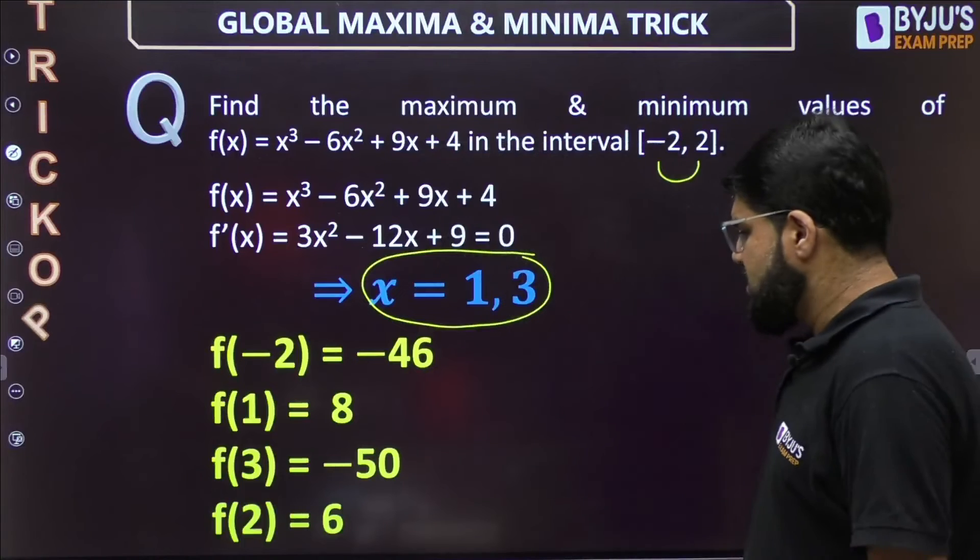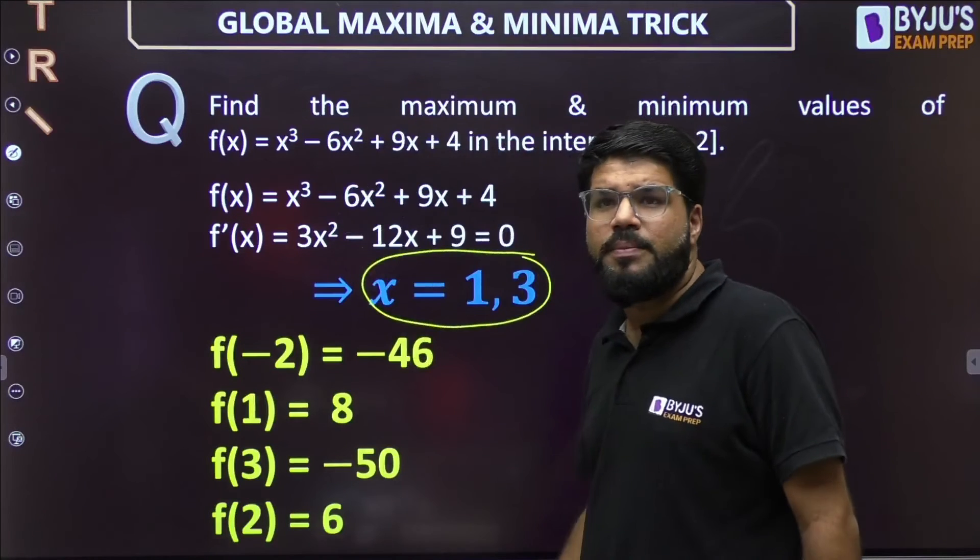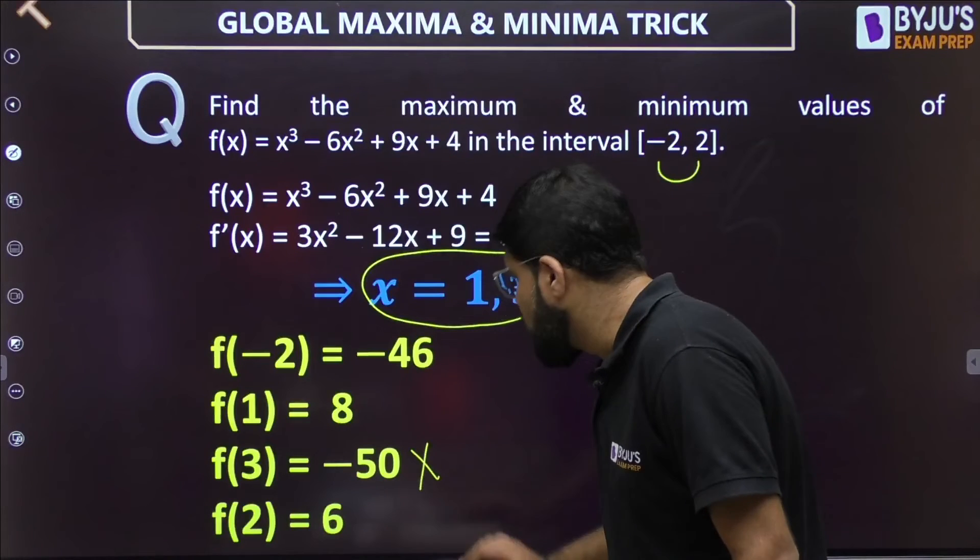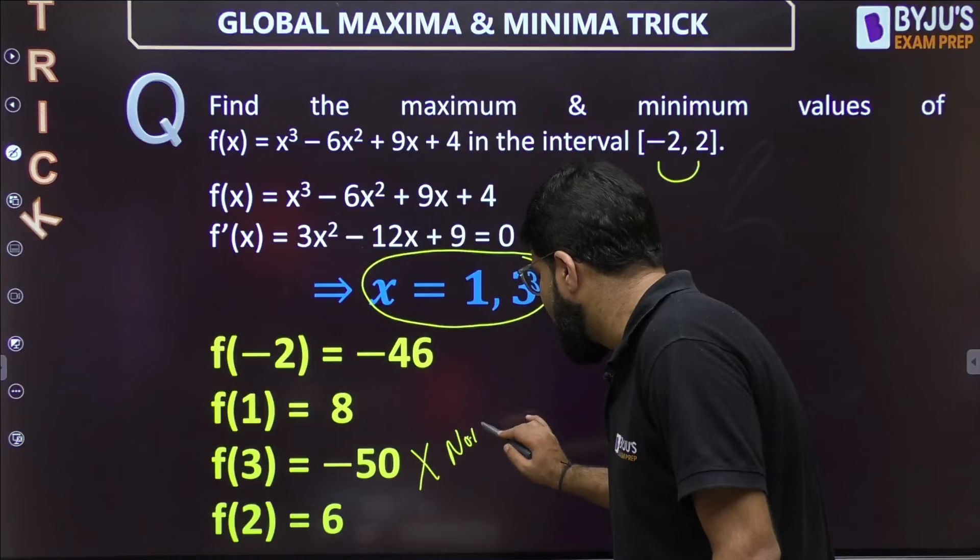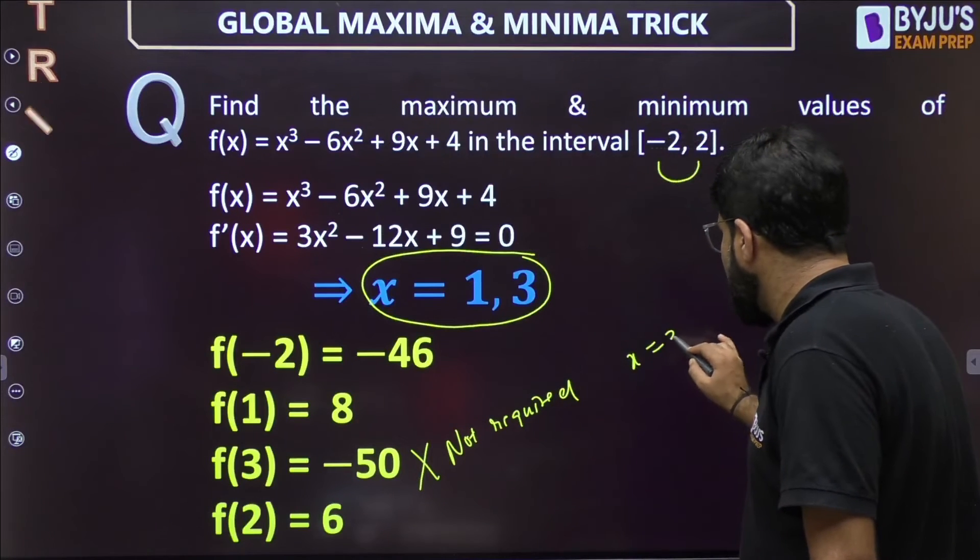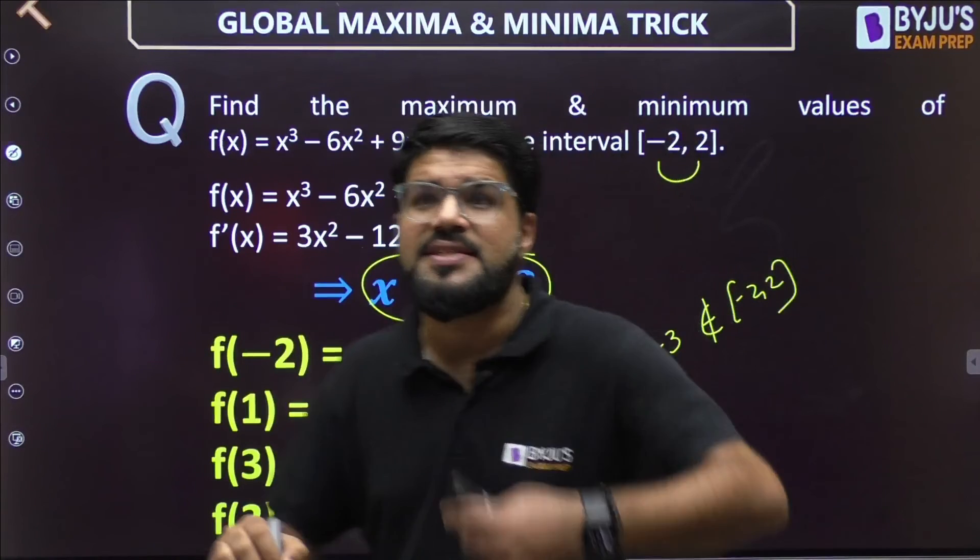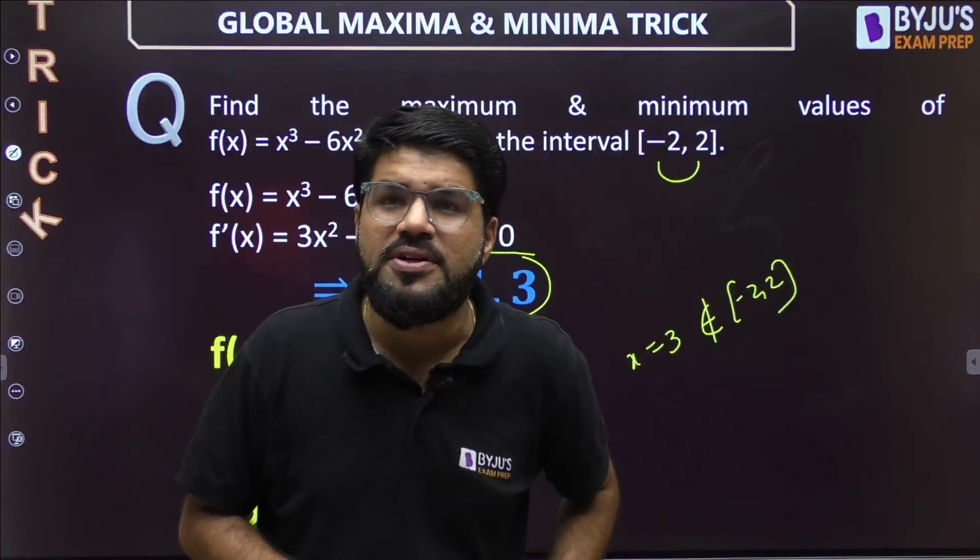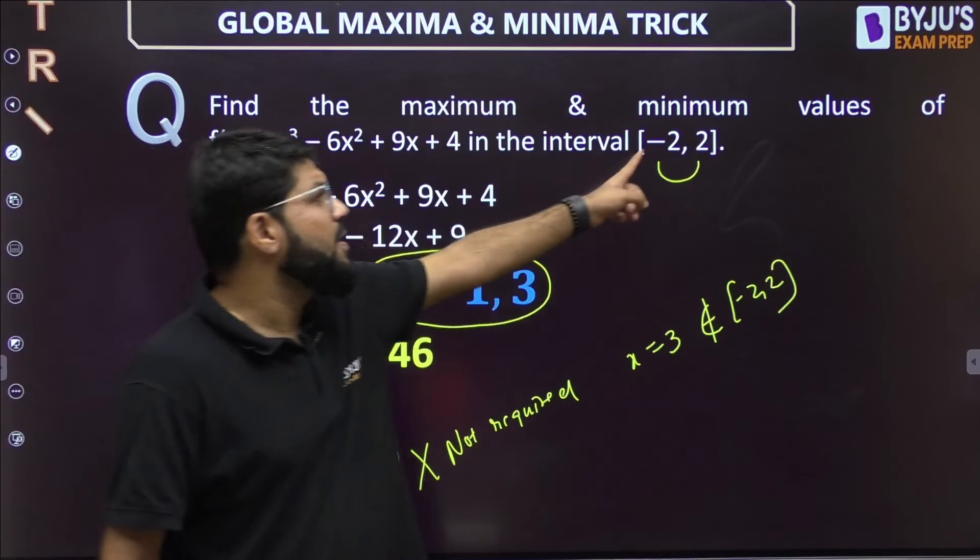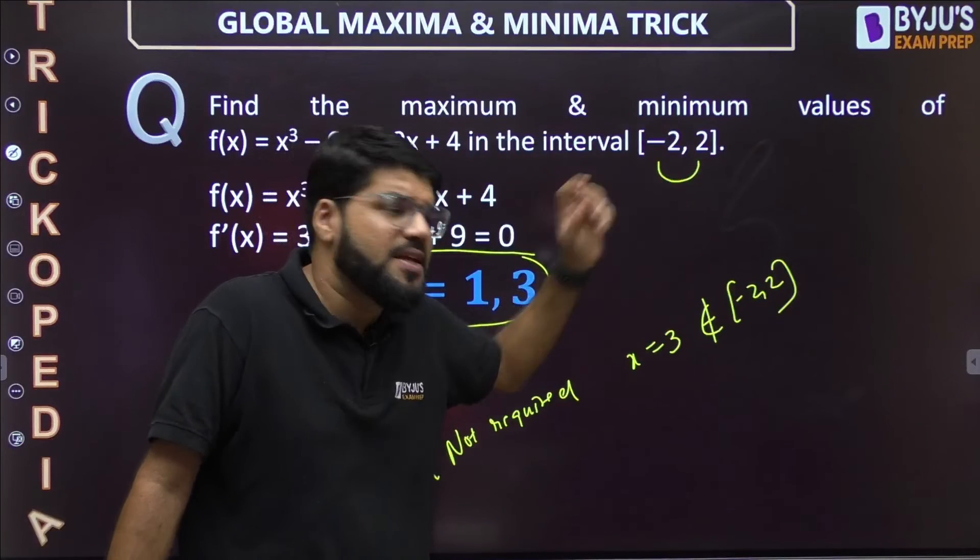But the important catch here is, you might be thinking which is the global minima—minus 50 is the smallest. So is this my global minima? Not at all. This is not global minima. This is not required. Sir, why is it not required? Because x = 3 does not belong to the given interval. Sometimes in a hurry we will do the mistake. Sir said calculate at stationary points and calculate at end points. But no, that particular stationary point is outside my given interval, so that is not to be considered. I only want the minima or maxima in this given interval.